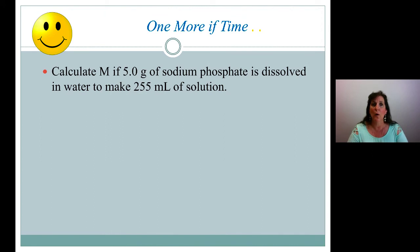We have time for one more. Let's try this one. Calculate the molarity if 5.0 grams of sodium phosphate is dissolved in water to make 255 milliliters of solution. Wow. This one's tough. I didn't give you moles. I didn't even give you liters. I gave you milliliters.